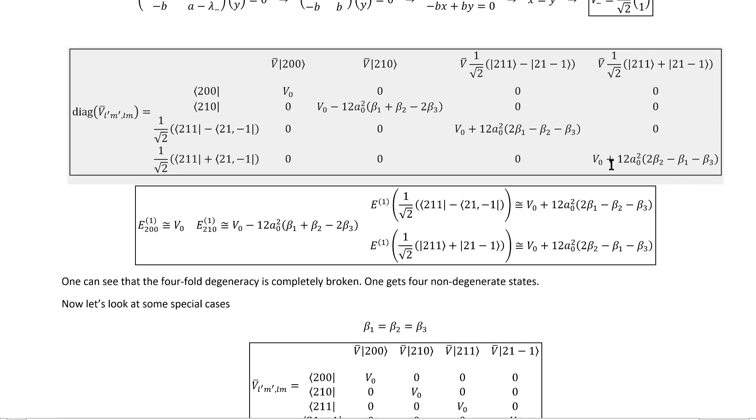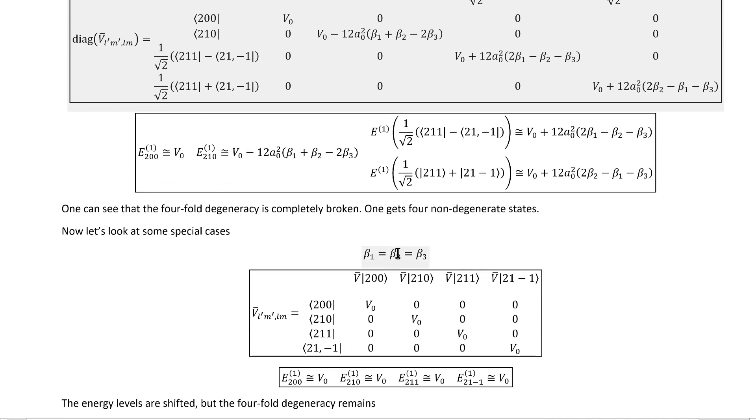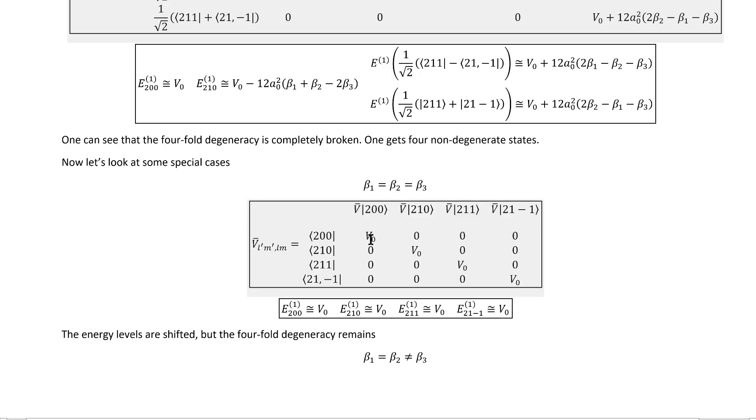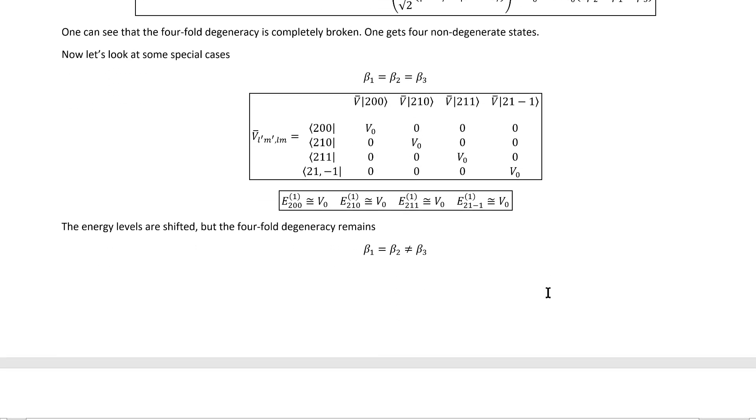Now let's look at some special cases. Let's say beta1, beta2, and beta3 are actually all equal. Well, then we don't actually have to diagonalize anything. It ends up not only being diagonal, but all the diagonal elements are the same. So none of the degeneracy is actually broken in that case.